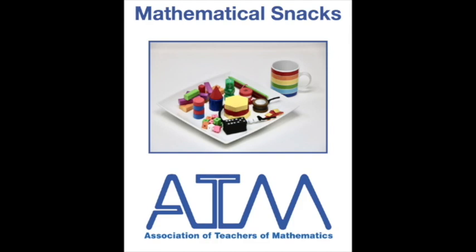This is a mathematical snack from the Association of Teachers of Mathematics. This is a game for two players called Squares. It's a bit like noughts and crosses, but in this game you have to make a square rather than a line. One player is noughts and the other is crosses. The first player to make a square wins.